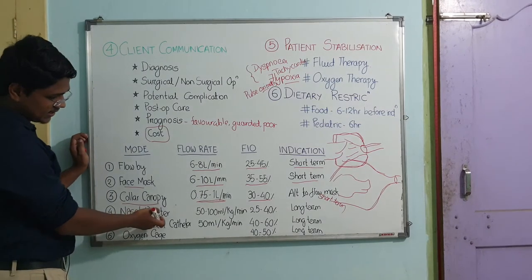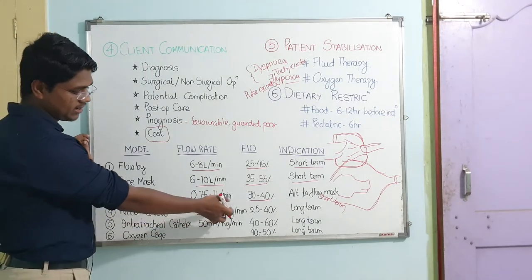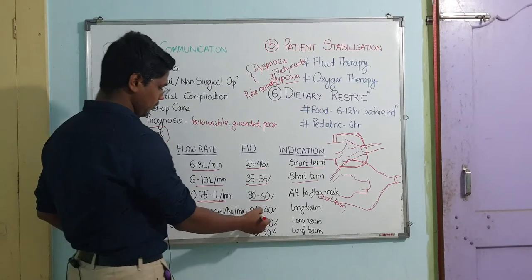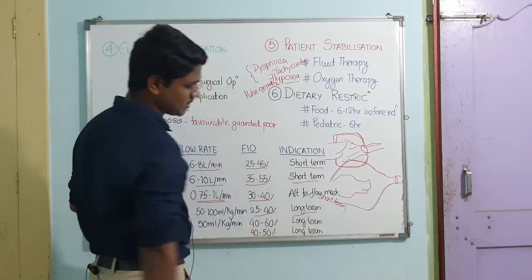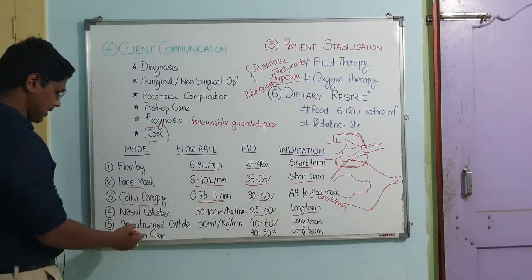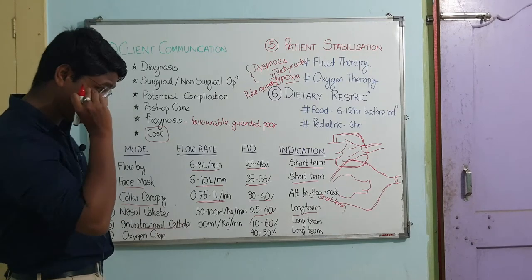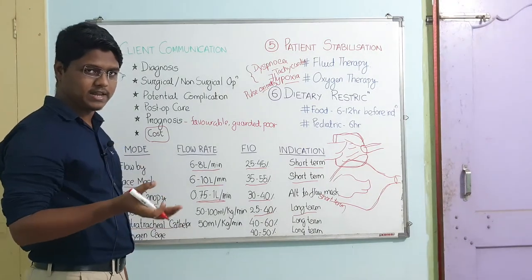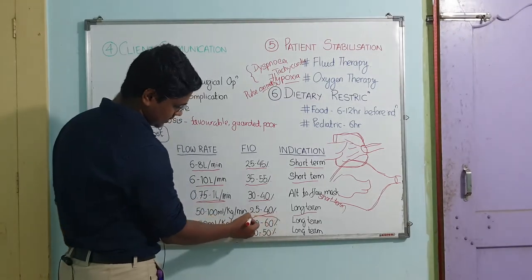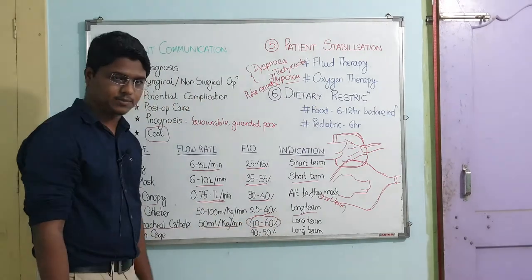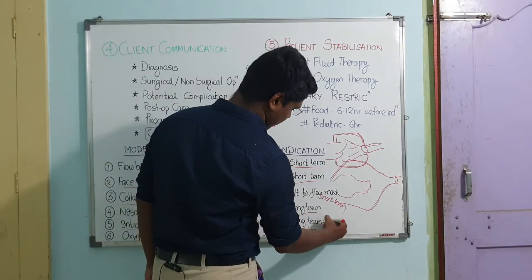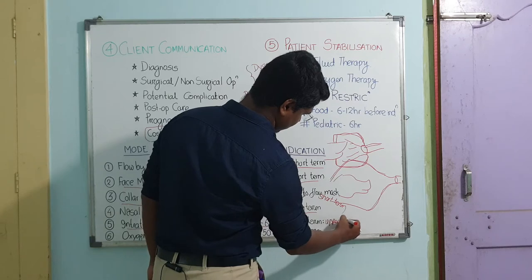For nasal catheter, the flow rate is 50 to 100 ml per kg per minute, with FiO2 of 25 to 40%. This is for long-term treatment when the animal is admitted to the hospital. For intratracheal catheter, the flow rate is 50 ml per kg per minute — the highest — with FiO2 of 40 to 60%. This is a long-term treatment and is practised when there is upper airway obstruction; otherwise it is not performed.